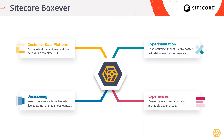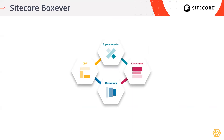The way Sitecore is able to do this is through four components: the customer data platform, the decisioning engine, a method of delivering experimentation to your customers, and a method of delivering experiences such as next best actions. With these four components working together, business users can make smart, data-driven decisions delivered to their customers in real time across all channels.